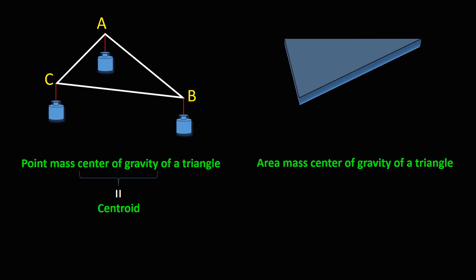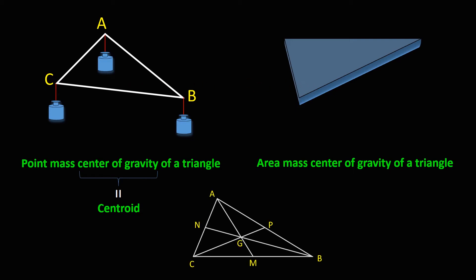Hi, in this video I want to show you how to find center of gravity of a triangle. Now we have two cases: one is point mass center of gravity, in which the masses are located at the vertices, and the second one is area mass center of gravity, in which the mass is distributed across an area. Now if these weights are equal, and if the mass is distributed uniformly, then we can show that both of these center of gravities are actually one point — the intersection of medians of the triangle.